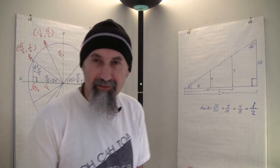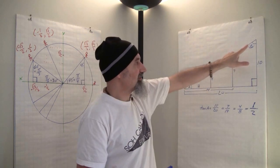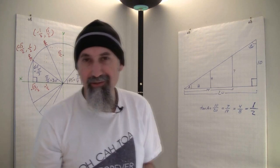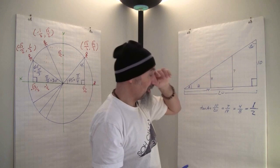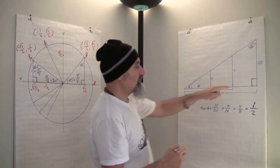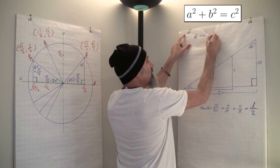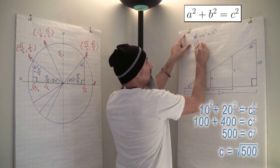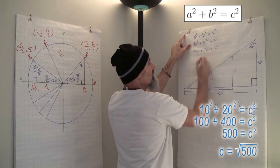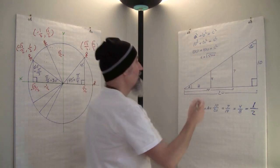To convince ourselves this also works for sine and cosine, let's use the Pythagorean theorem to figure out the hypotenuse distances — from there to there, and from there to there. We'll do it for two triangles. For the big triangle, Pythagorean theorem: a squared plus b squared equals c squared, so 10 squared plus 20 squared equals c squared.